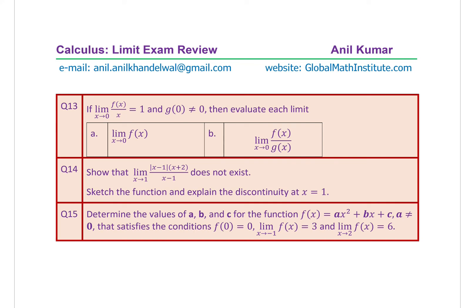For question 14, sketch the graph and explain the discontinuity at x equals 1. Question 15: determine the values of a, b, and c for the function f of x equals ax squared plus bx plus c (where a is not equal to 0), such that f of 0 equals 0, the limit of f of x equals 3 as x approaches minus 1, and the limit of f of x equals 6 as x approaches 2. These are the 15 questions for you.